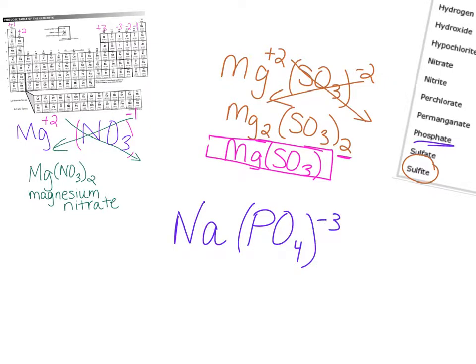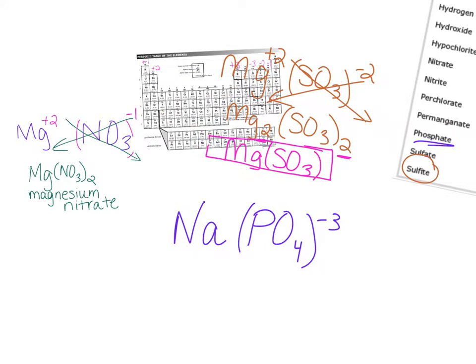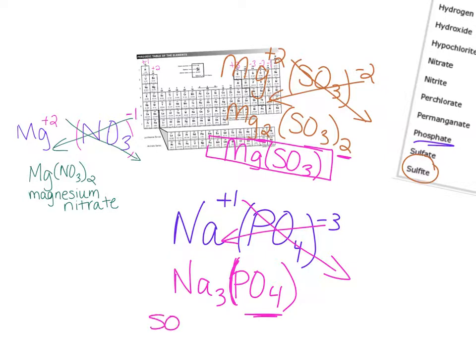Sodium is found in group one, so sodium has a plus one charge. So we're going to go ahead and indicate that on here. And we take that information, crisscross our charges again, and we end up with Na3PO4. Now, typically, you wouldn't have to write the parentheses, but because we are just learning, I do recommend you do this so that you know that you cannot touch anything inside the parentheses, only stuff on the outside. Okay, so that right there is sodium phosphate.